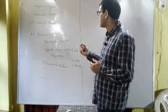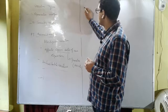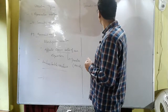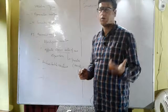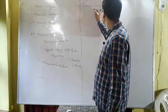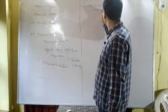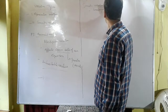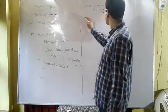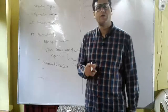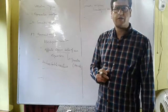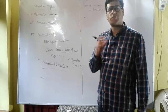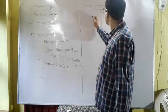Then we have somatic variation. Somatic variation is also called as somatogenic variation. This somatogenic variation affects the somatic cells, or body cells, of the living organism.